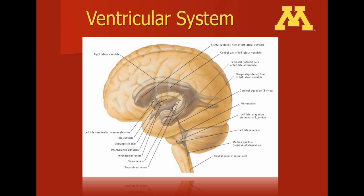The lateral ventricle is connected through the foramen of Monroe to the third ventricle. The third ventricle is a midline structure, which is then connected to the fourth ventricle through the cerebral aqueduct. The fourth ventricle is located posterior to the brainstem and anterior to the cerebellum.